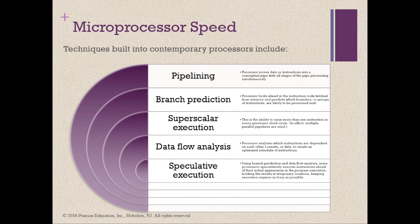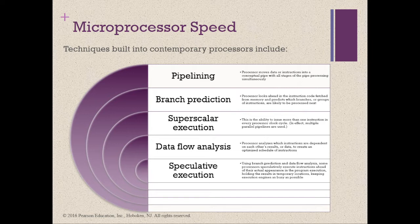But raw processor speed will not achieve its potential unless it is fed a constant stream of instructions. Anything that gets in the way of that smooth flow undermines the power of the processor. Among the techniques built into contemporary processors is pipelining. The execution of an instruction involves multiple stages: fetching the instruction, decoding the opcode, fetching operands, performing a calculation, and so on. Pipelining enables a processor to work simultaneously on multiple instructions by performing a different phase for each at the same time. While one instruction is being executed, the computer is decoding the next.